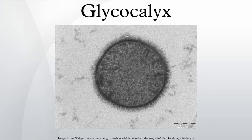Other generalized functions of the glycocalyx include: protection — it cushions the plasma membrane and protects it from chemical injury; immunity to infection — it enables the immune system to recognize and selectively attack foreign organisms; defense against cancer — changes in the glycocalyx of cancerous cells enable the immune system to recognize and destroy them; transplant compatibility — it forms the basis for compatibility of blood transfusions, tissue grafts, and organ transplants; cell adhesion — it binds cells together so that tissues do not fall apart; inflammation regulation — glycocalyx coating on endothelial walls in blood vessels prevents leukocytes from rolling and binding in healthy states; fertilization — it enables sperm to recognize and bind to the egg; and embryonic development — it guides embryonic cells to their destinations in the body.